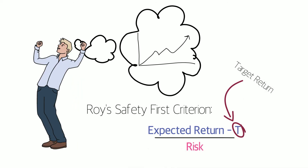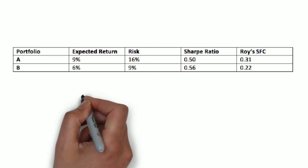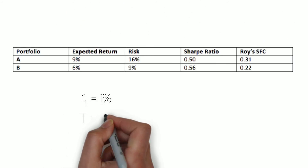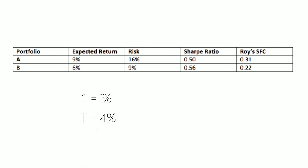Let's compare these two ratios by looking at two different portfolios. Assuming a risk-free rate of 1% and a target return of 4%, we see that while Portfolio B has the higher Sharpe Ratio, it has a lower Roy's Safety First Criterion, because Portfolio A is more likely to meet the target return, despite higher risk.